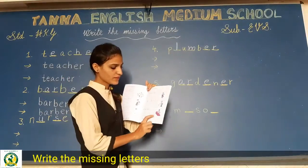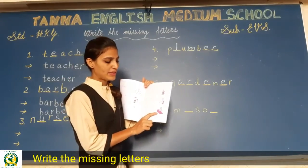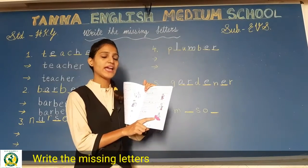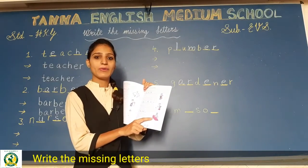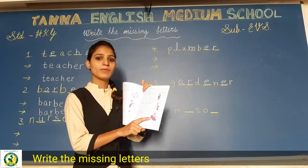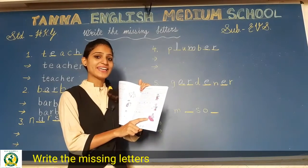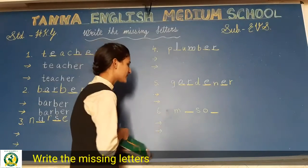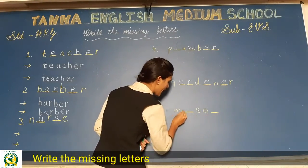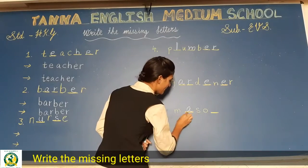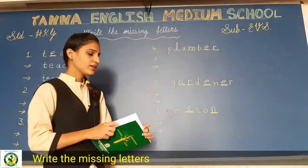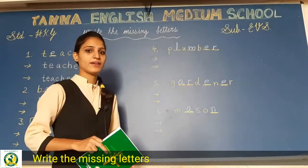अभी last देखो — यह bricks से कुछ कर रहा है, यह person हमारे घर बनाता है। उसको हम mason बोलते हैं। तो mason का spelling: M-A-S-O-N, mason. और यह भी आपको two times लिखना है।